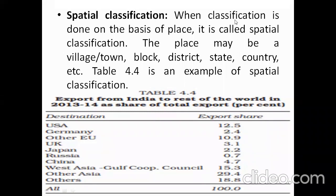In spatial classification, data are classified on the basis of place or location. The place may be a village, town, block, district, state, or country. In table 4.4, the export from India to the rest of the world in 2013–14 as a share of total exports shows: USA 12.5%, Germany 2.4%, European countries 10.9%, UK 3.1%, Japan 2.2%, Russia 0.7%, China 4.7%, West Asia 15.3%, Other Asia 29.4%, and other countries. Since classification is done on the basis of location or destination, this is called spatial classification.